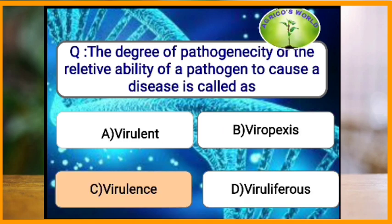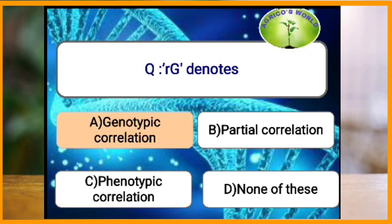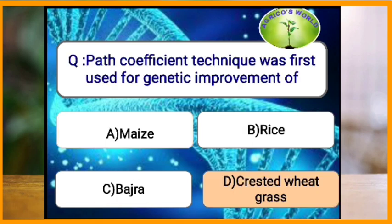The degree of pathogenicity or the relative ability of the pathogen to cause a disease is called what? It is called virulence. RG denotes genotypic correlation, whereas RP denotes phenotypic correlation.